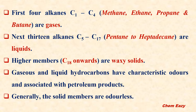So, the first four alkanes — that is methane, ethane, propane, and butane — which are having carbon 1, 2, 3, and 4 respectively. These are all gases.